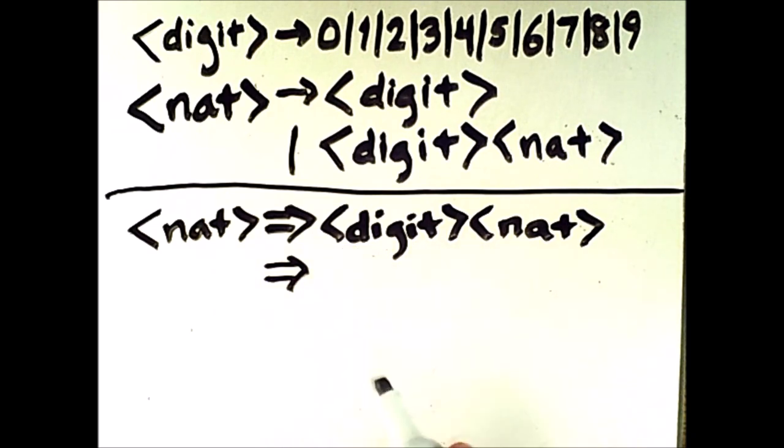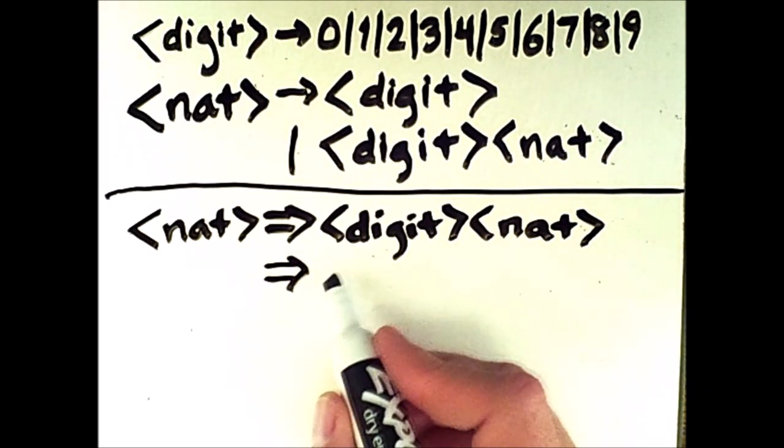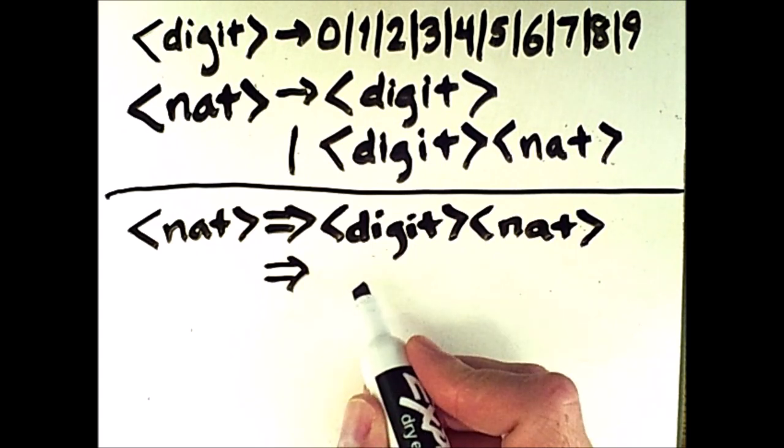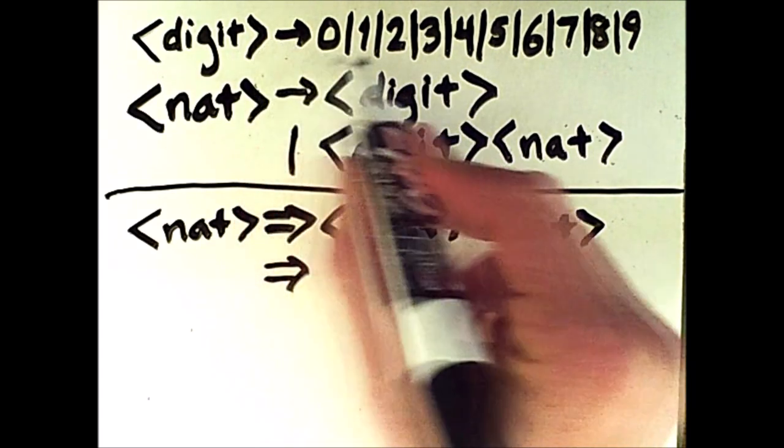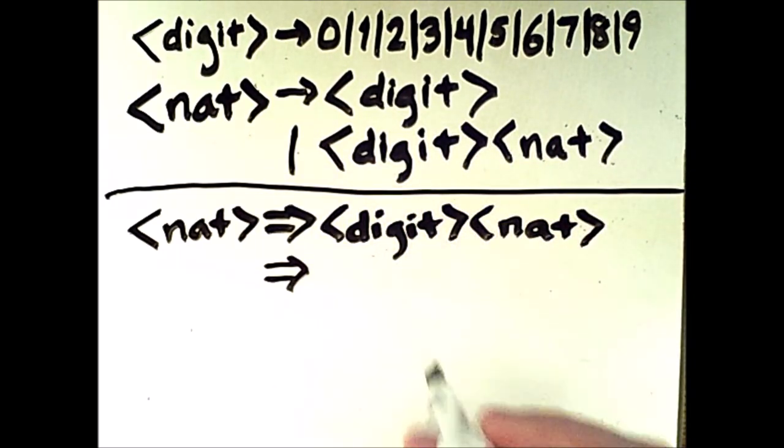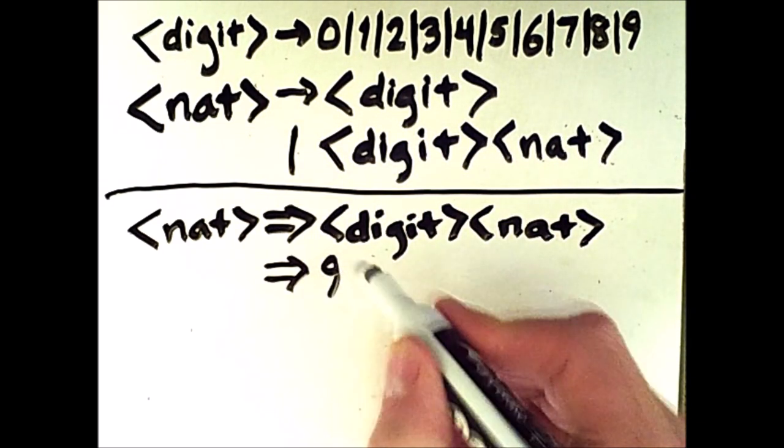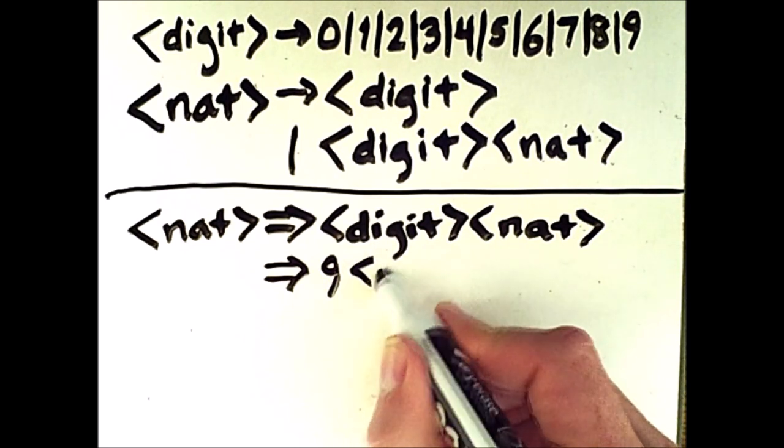Now I'm going to be doing what is called a leftmost derivation, meaning I'm always going to expand things on the left first. So a digit has to expand to one of these things, so I'm going to arbitrarily pick 9. That leaves us with 9 NAT.